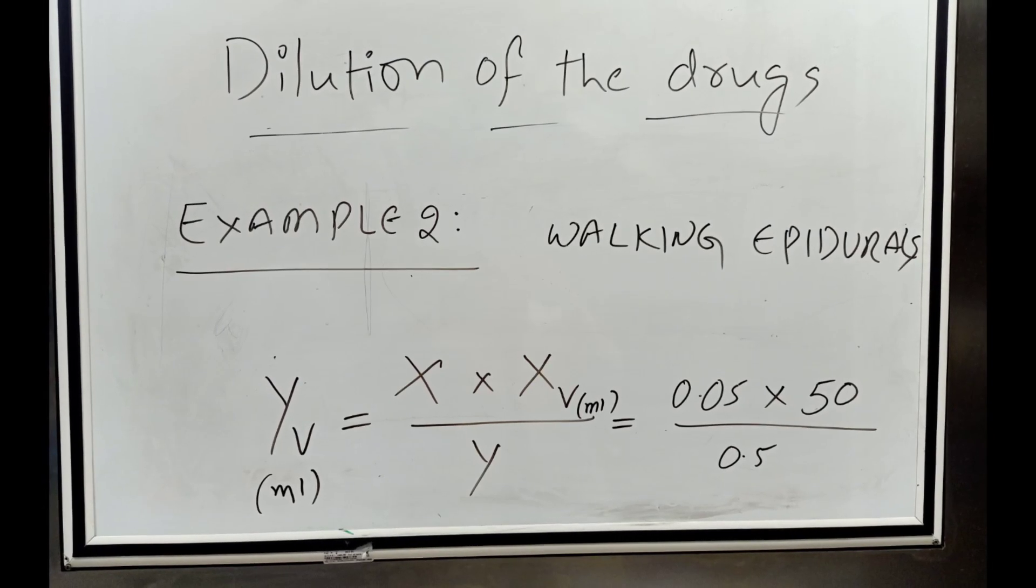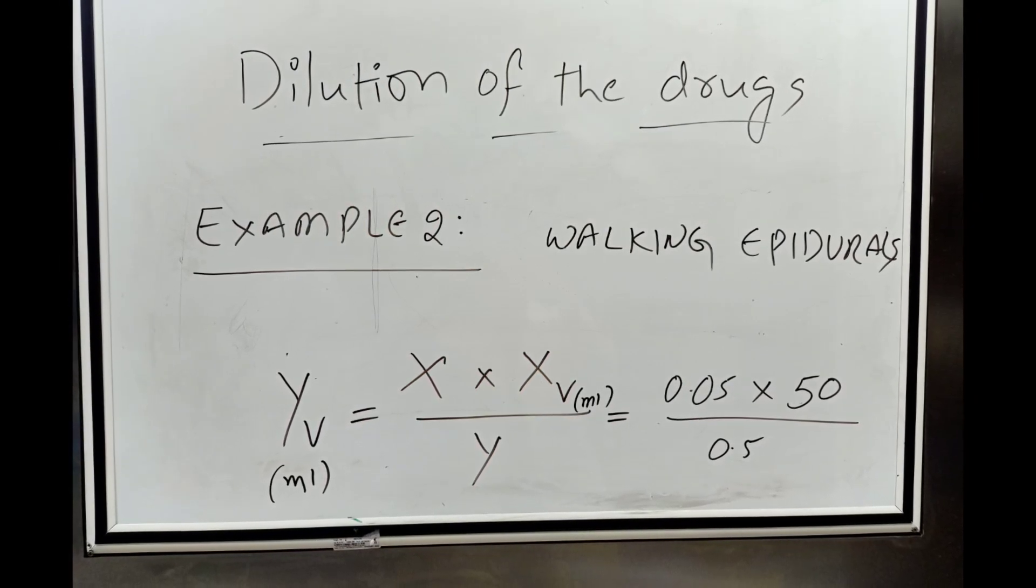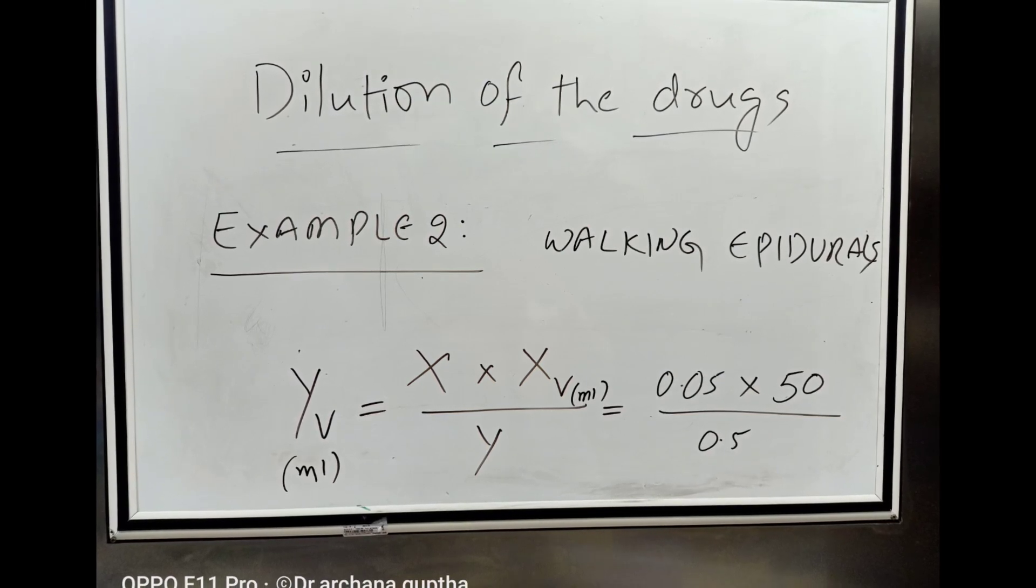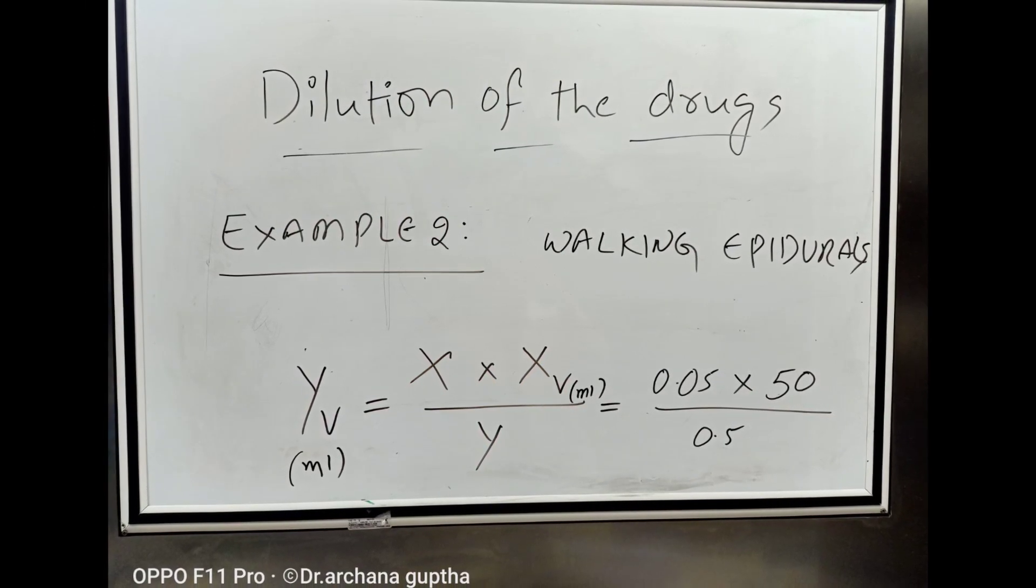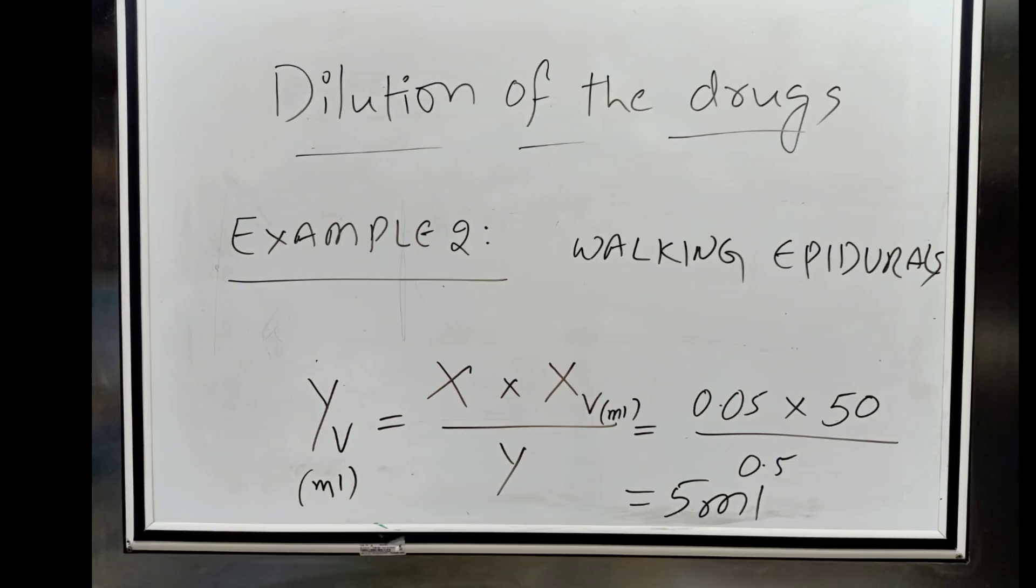As I said previously, here available concentration is 0.5%. Applying the above formula, YV equals desired concentration times desired volume divided by available concentration. Therefore, YV is 5 ml here.